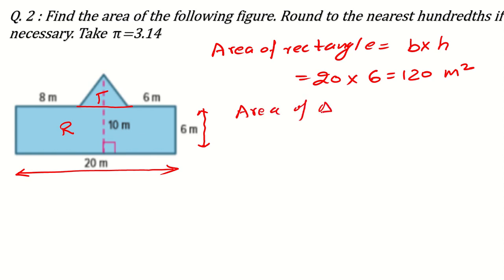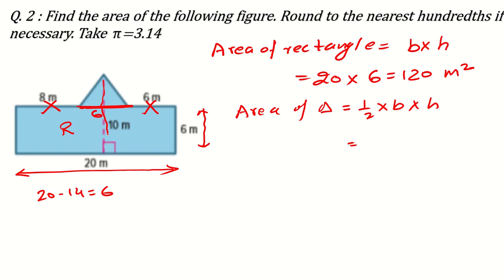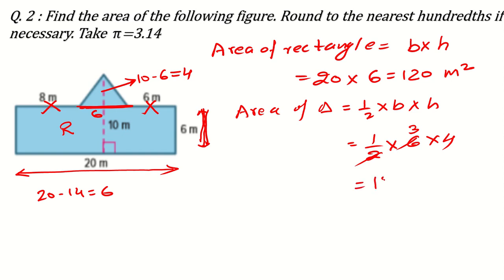Area of triangle is half times base times height. The trick here is finding the base — it is only the red line in the middle. The total width is 20; subtracting 8 and 6 on the sides gives 20 minus 14 = 6 for the base. The total height is 10, minus 6 for the rectangle, leaving a triangle height of 4. So area = half times 6 times 4 = 12 meters square.